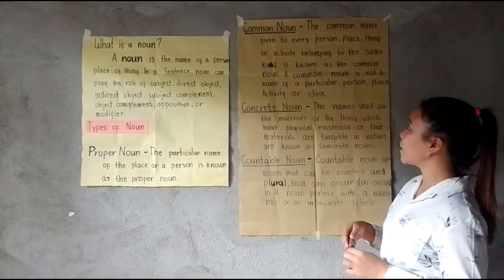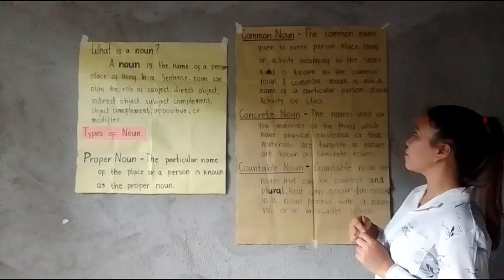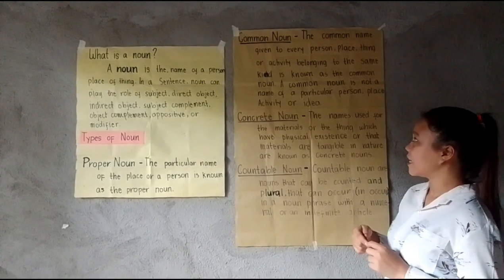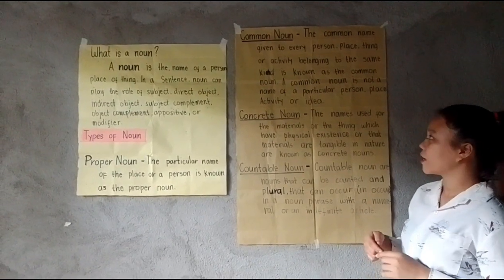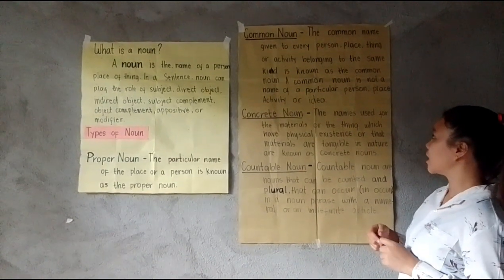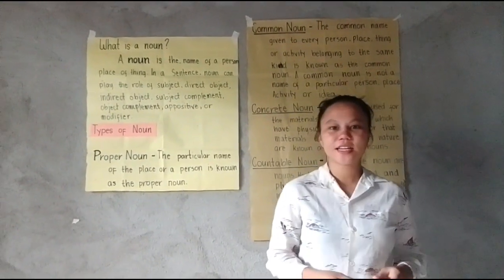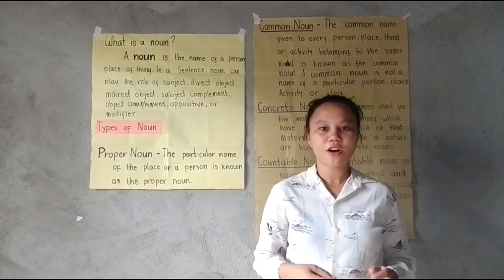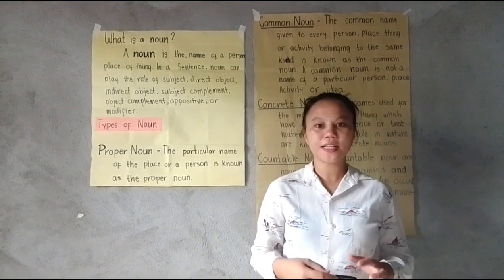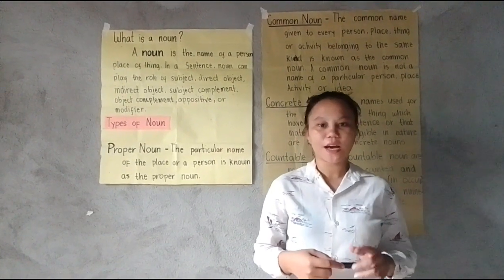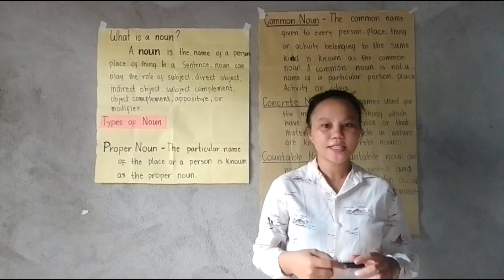Second: common noun. The name given to every person, place, thing, or activity belonging to the same kind is known as the common noun. A common noun is a noun that describes a type of person, thing, or place, or that names a concept. Common nouns are not capitalized unless they appear at the start of a sentence, unlike proper nouns, which are always capitalized.